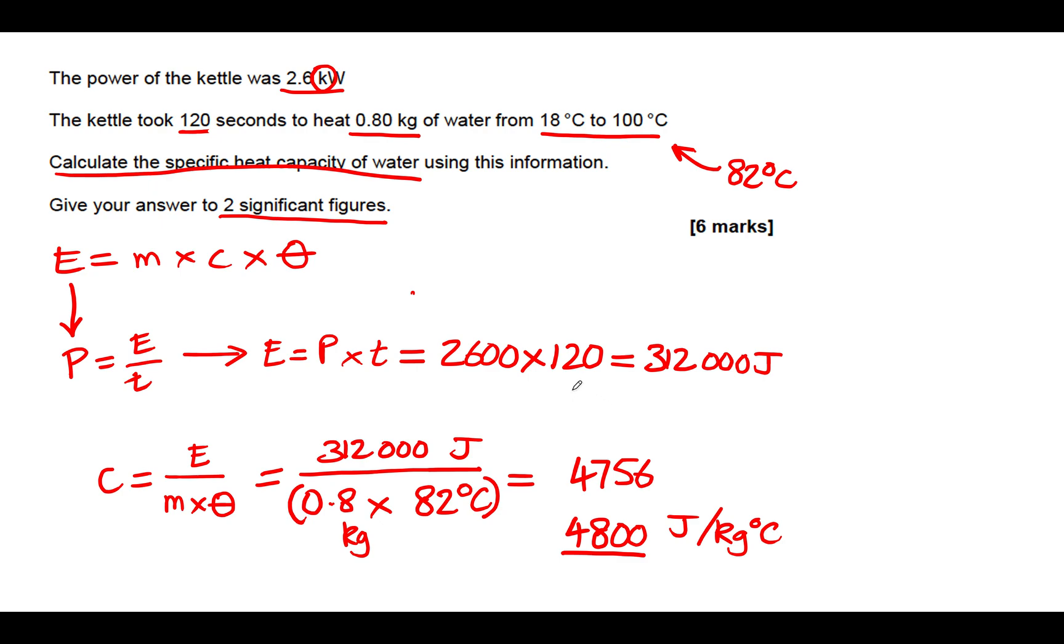There was quite a lot involved for six marks there—quite a lot of steps. Whenever you see, as I said, a six-mark calculation question, you know that there is going to be two steps to the calculation, two formulas involved probably. All right, so good luck with that, and maybe this is a good time to have a go at a specific heat capacity calculation question for yourself. See ya, bye.